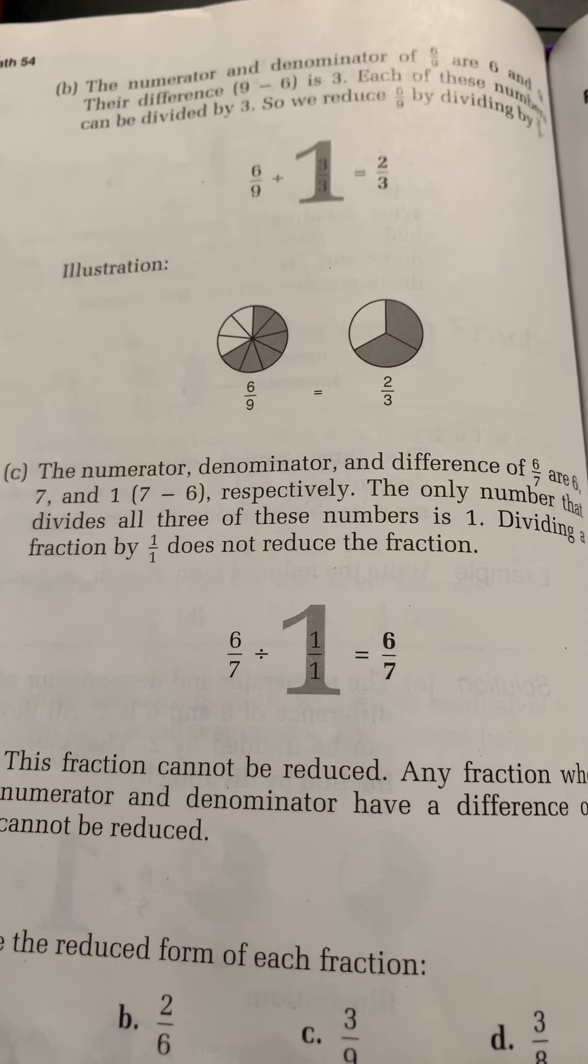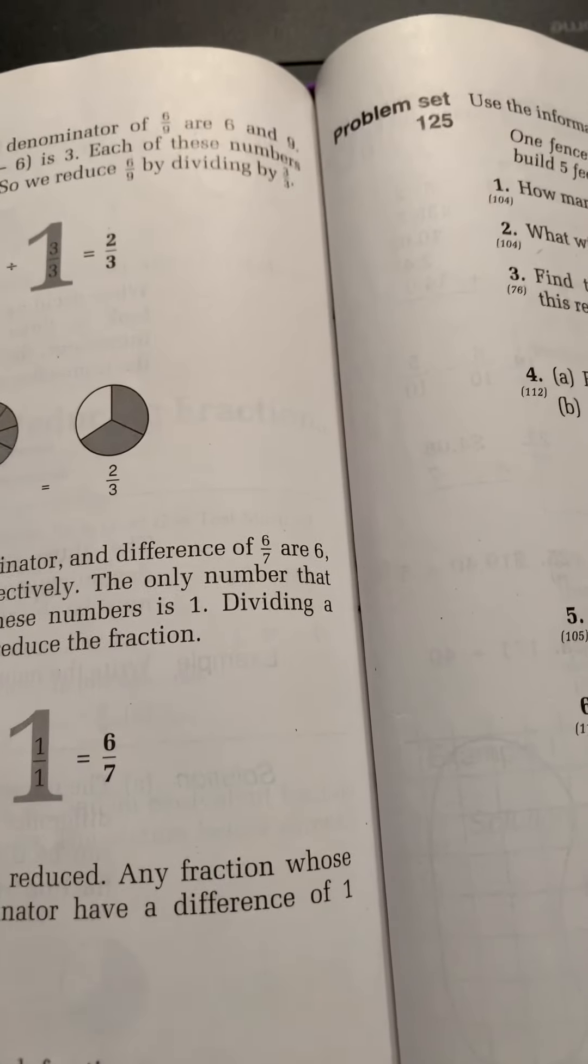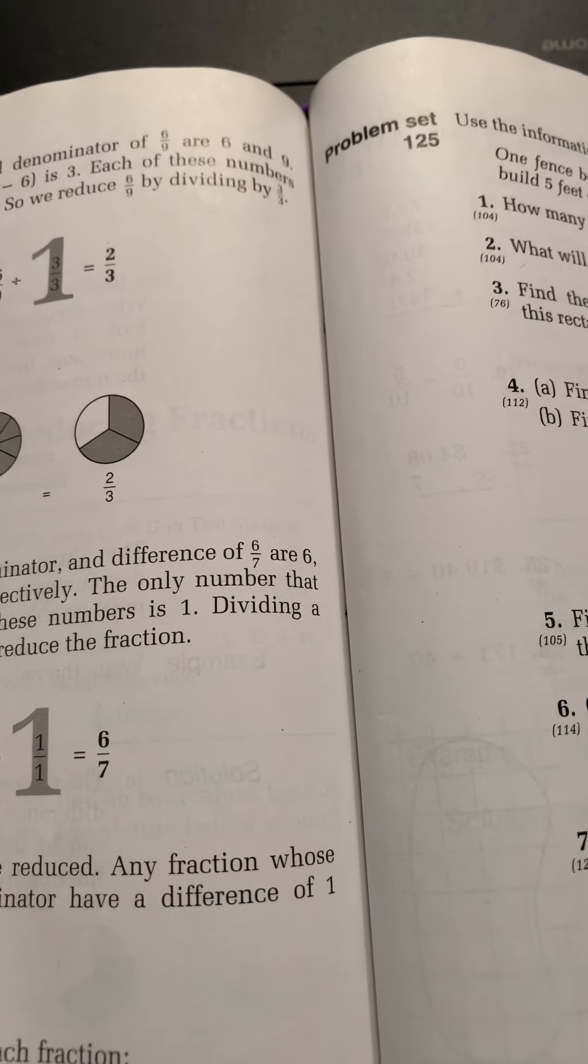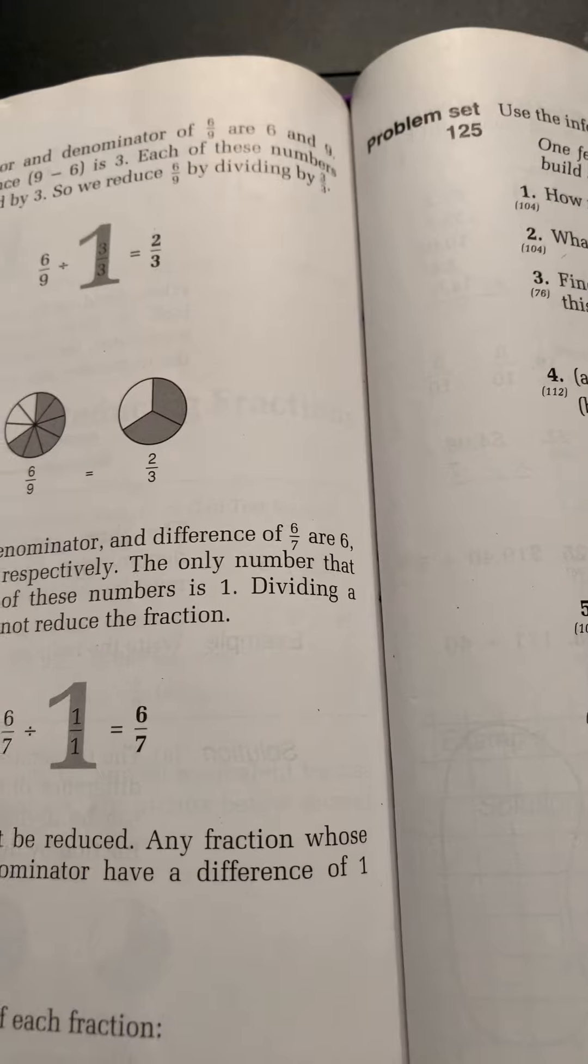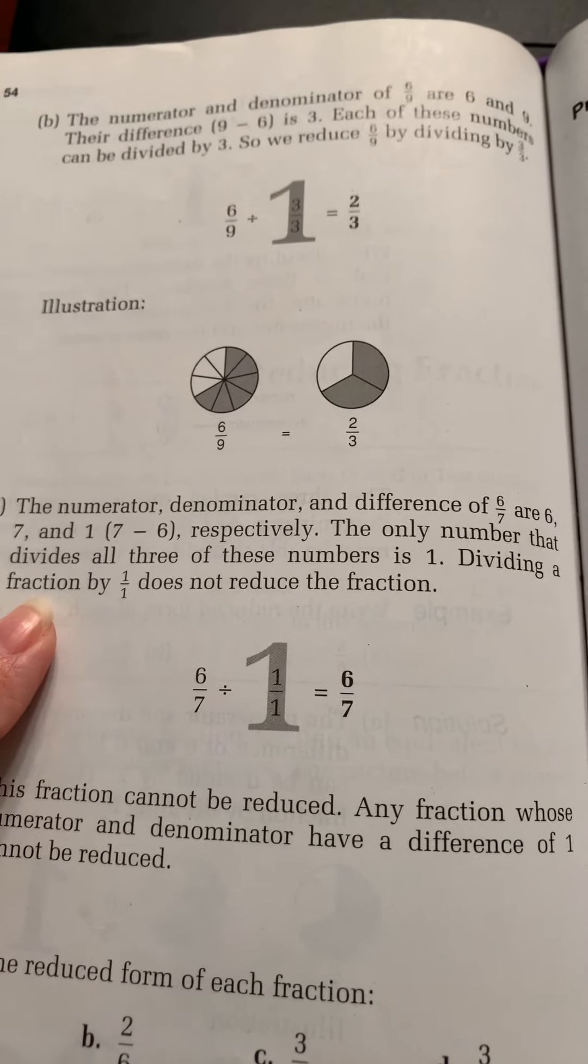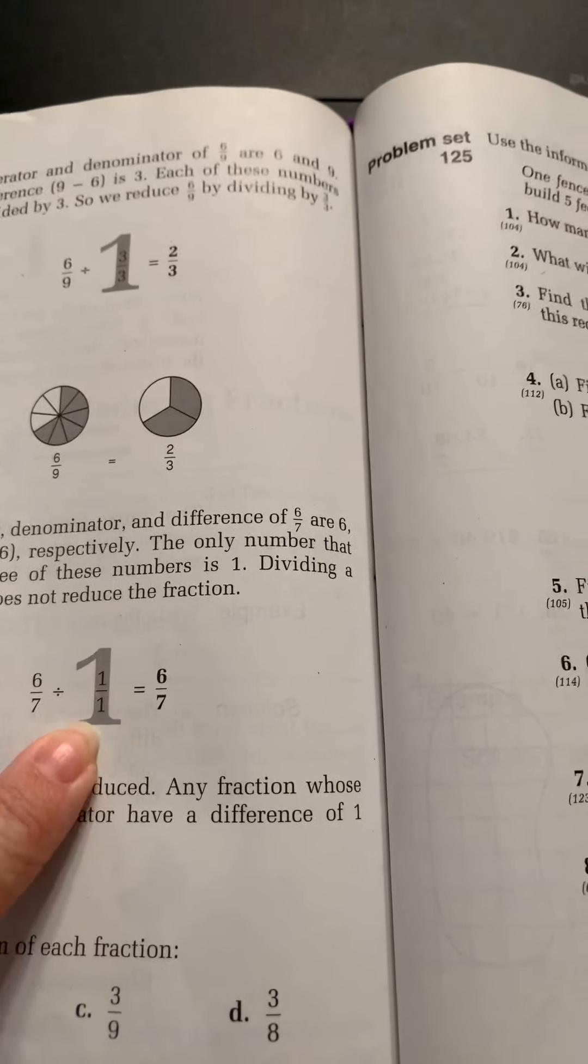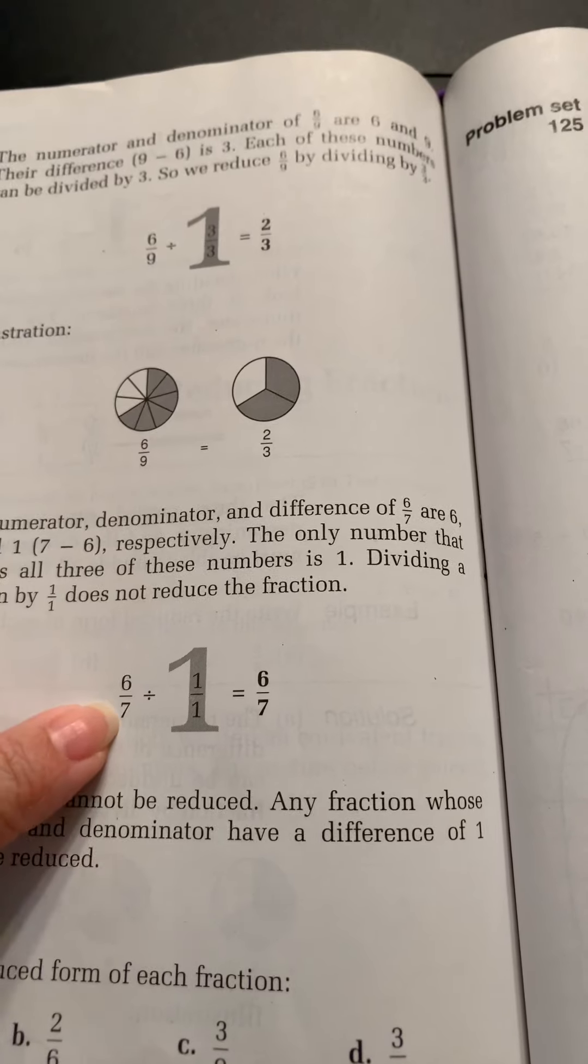The numerator, denominator, and difference of six-sevenths are seven and six, and then when we get the difference, it's one. So the only number that divides all three of these numbers is one. And dividing by one does not reduce the fraction. So here's where I was telling you, like, seven is prime.